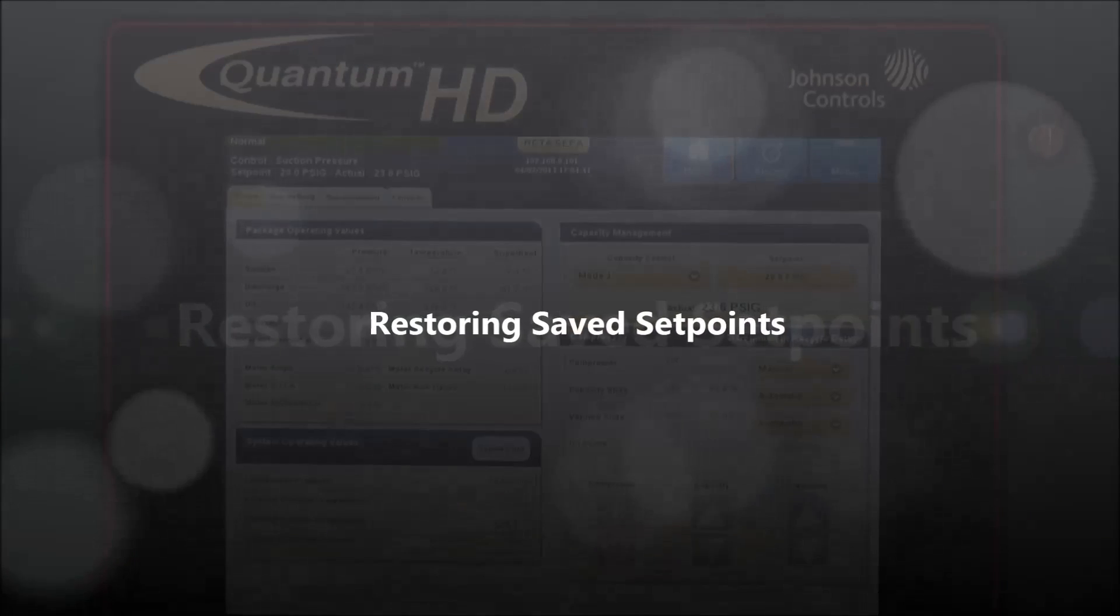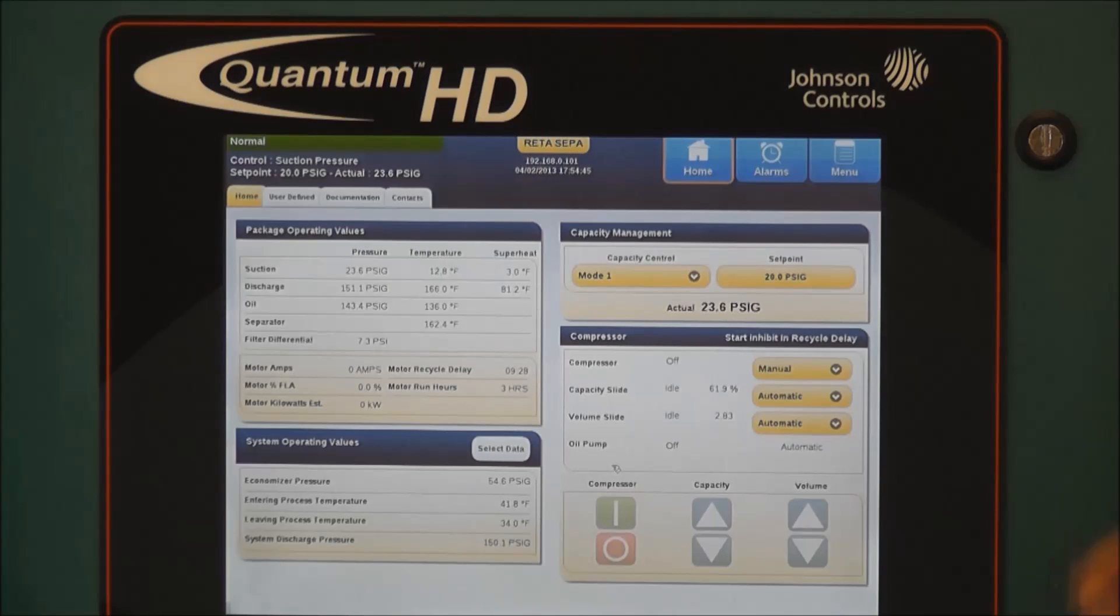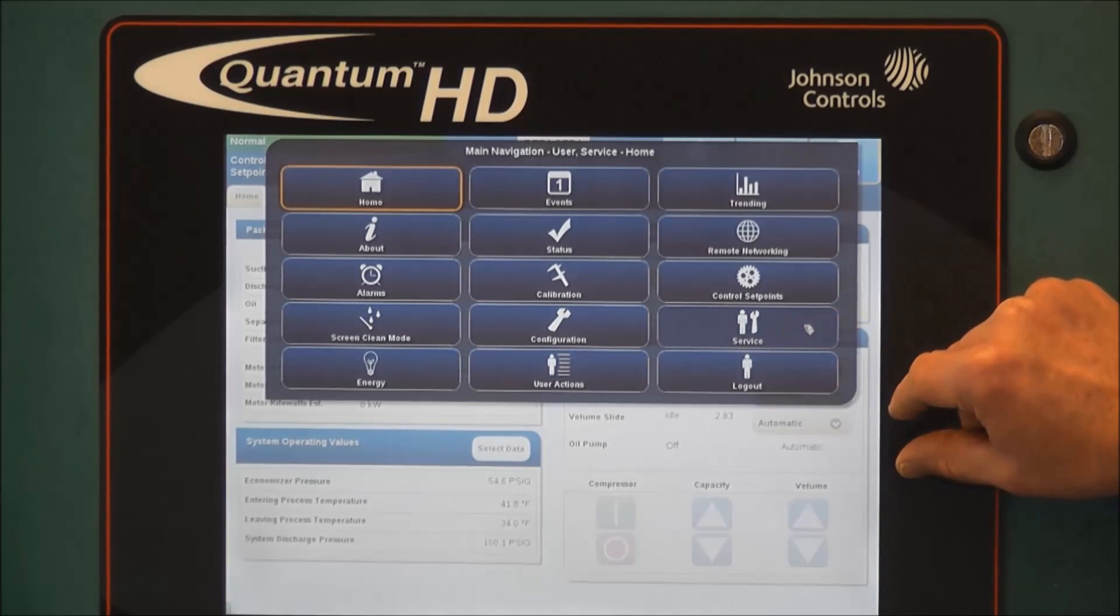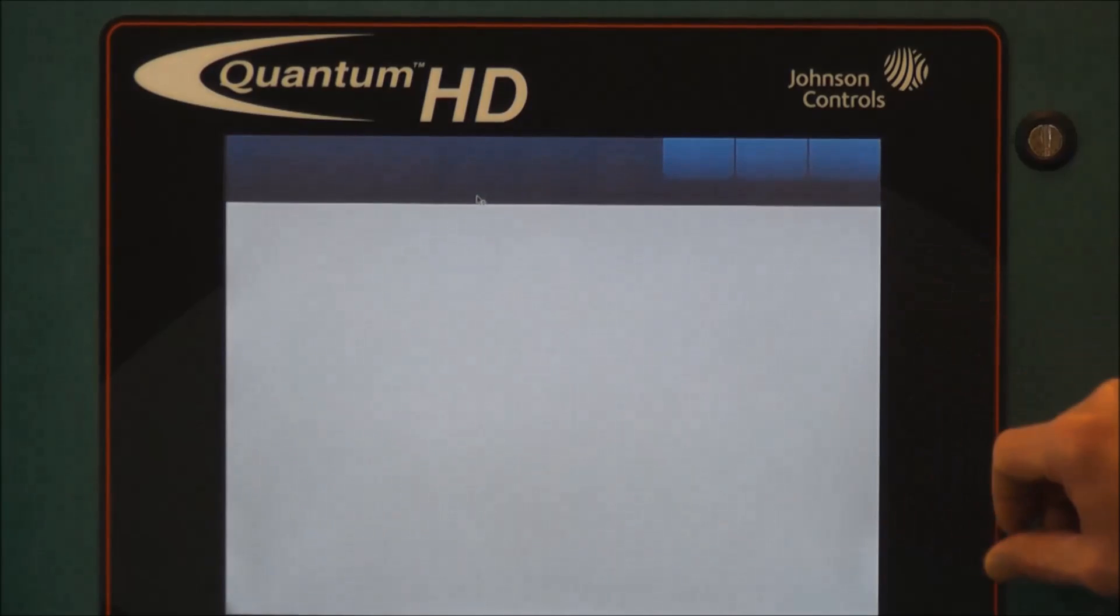Now that the USB thumb drive is installed and we have logged back into the Quantum HD controller, we will once again select menu, then service, and from the service page once again, the software file tab.